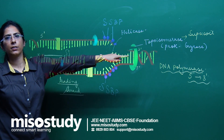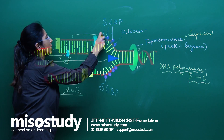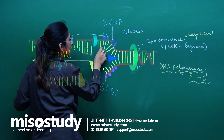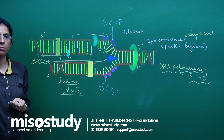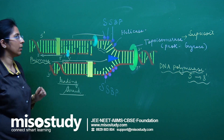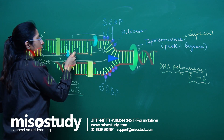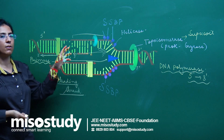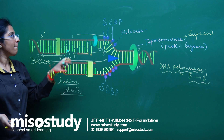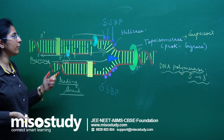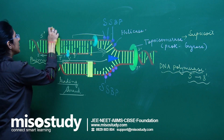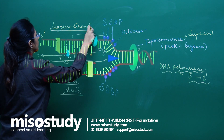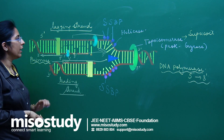As helicase continues opening the fork, more single-stranded regions are exposed. Primase is recruited again on this side, forms another RNA primer, and DNA polymerase follows to synthesize another fragment in the 5′ to 3′ direction. This means the lagging strand forms in a discontinuous manner — not continuously.